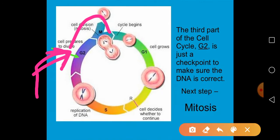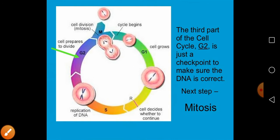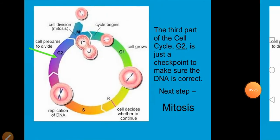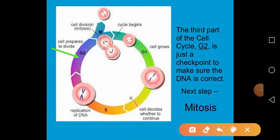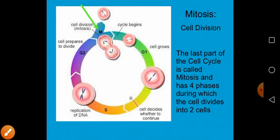Checkpoints are very important — they check whether all processes are going on correctly. One checkpoint verifies whether DNA has been correctly replicated, and another checks other processes. If anything is wrong, the cell cycle is halted at that particular position.